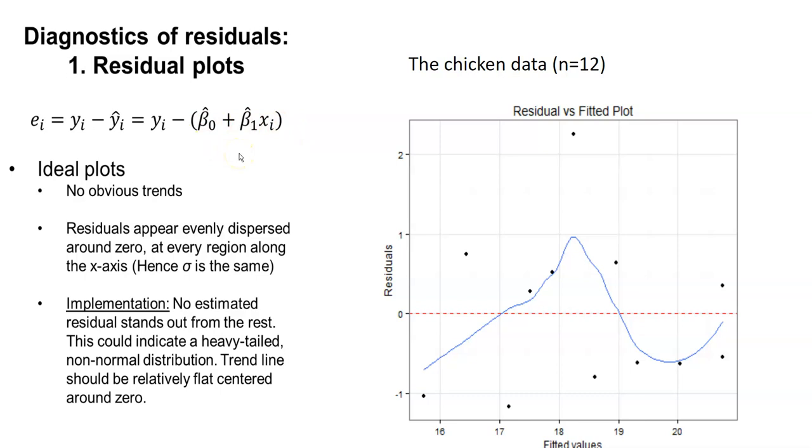And so ideally, we would see no estimated residuals standing out from the rest of the data points. If a data could indicate a heavy-tailed or non-normal distribution, ideally this blue line, this trend line that we drew, would be all around zero.